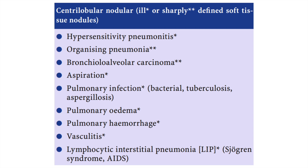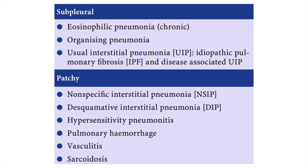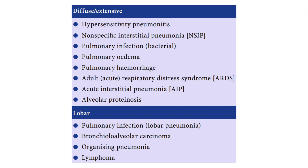For distribution in consolidation: centrilobular or nodular appearance points to hypersensitivity pneumonitis, organizing pneumonia, bronchoalveolar carcinoma, and aspiration. Subpleural is most importantly seen in eosinophilic pneumonia and organizing pneumonia; UIP may also present as consolidation. Patchy is predominantly NSIP. Diffuse points to hypersensitivity pneumonitis, non-specific pulmonary infection (mainly bacterial), edema, or hemorrhage. A lobar pattern — where a full lobe is affected — is most common in lobar pneumonias, bacterial infections, bronchoalveolar carcinoma, organizing pneumonia, and lymphoma.